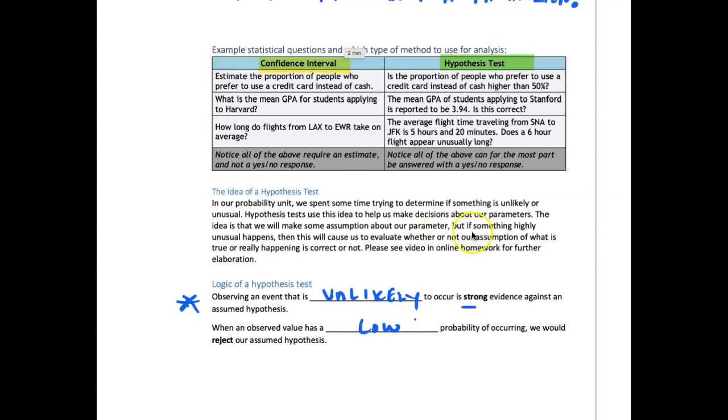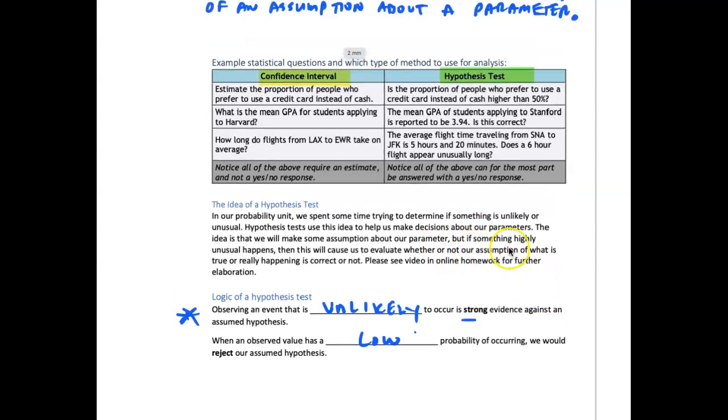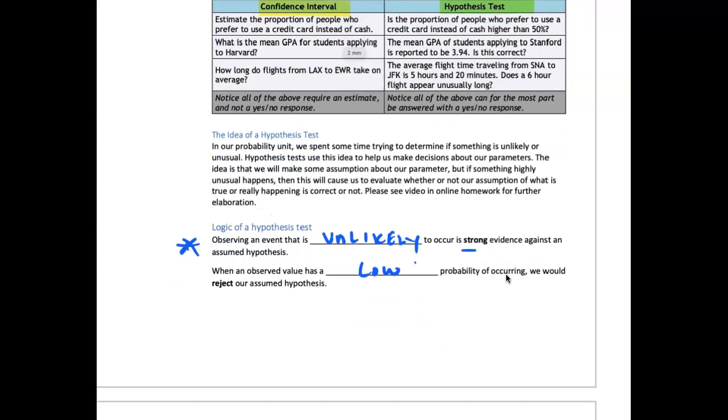Now, the idea of a hypothesis test is similar to kind of like a court case where we have assumptions about a defendant on trial. And we're going to end up determining through the sample data, through the evidence, if we have enough evidence to convict or not convict. To say guilty or not guilty. In our world, we say to reject or not reject or to reject or fail to reject. And so the logic behind the hypothesis test is connected to kind of our court system.